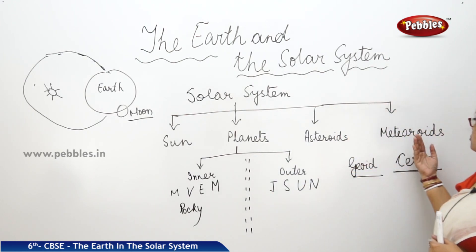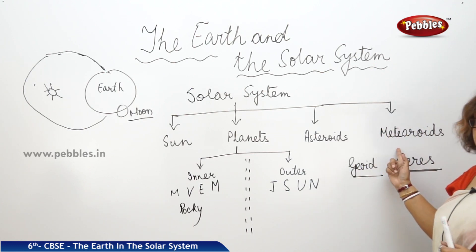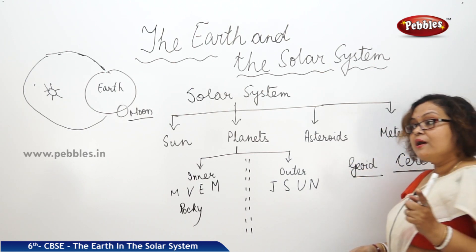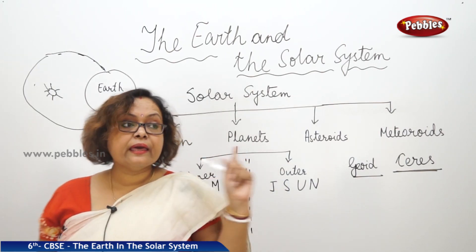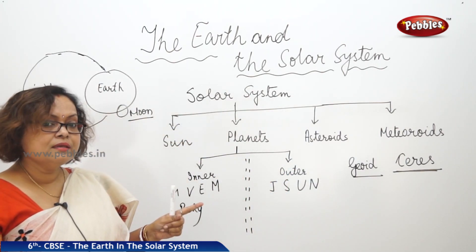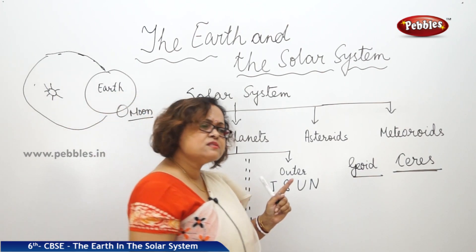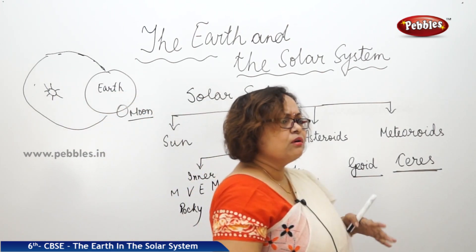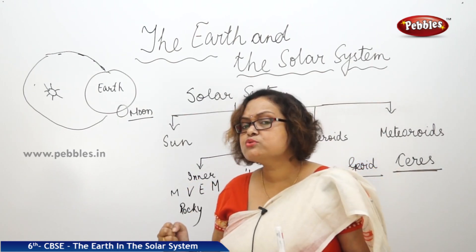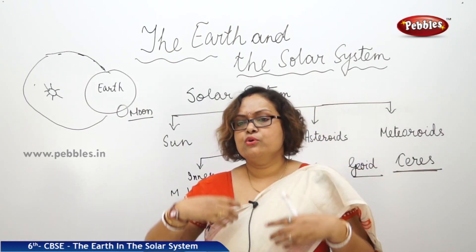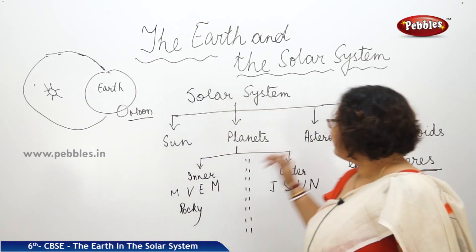Next we are coming to meteoroids. They are smaller than asteroids. If I say that many times you have seen them, will you believe me? Yes, you have! You remember the shooting star — maybe your grandma told you to close your eyes and pray to the shooting star and your wish will be fulfilled. They are nothing but meteoroids.